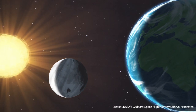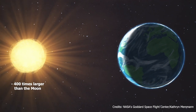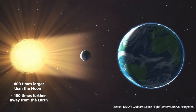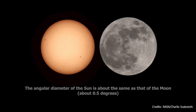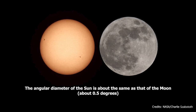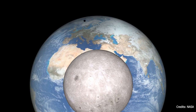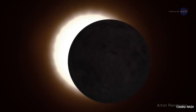Even though the Sun is about 400 times larger than the Moon, it also happens to be 400 times further away from the Earth than the Moon is. For this reason, the Sun and the Moon appear to have virtually the same angular size in our skies. Thanks to this coincidence, we can observe spectacular astronomical phenomena.